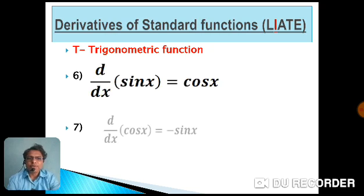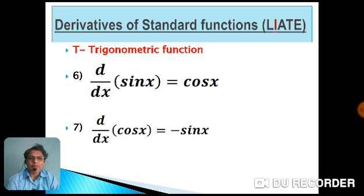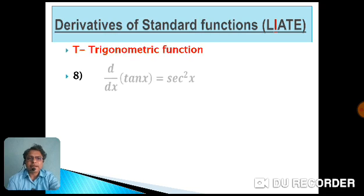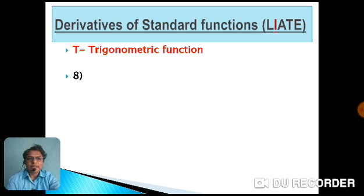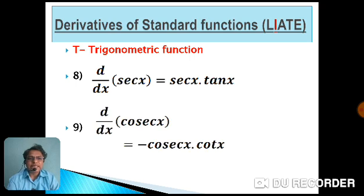For trigonometric functions, out of the six, we group them in pairs. The derivative of sin x is cos x and the derivative of cos x is −sin x — note the similarities and differences. Next, the derivative of tan x is sec²x, and the derivative of cot x is −cosec²x. Finally, the derivative of sec x is sec x · tan x, and the derivative of cosec x is −cosec x · cot x.